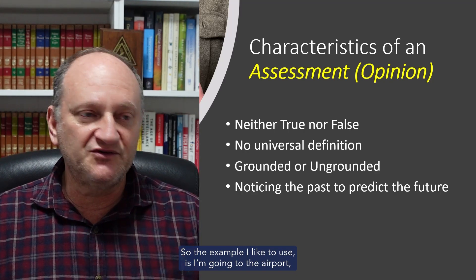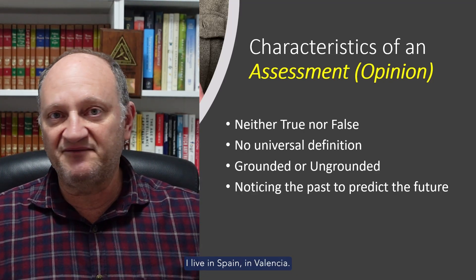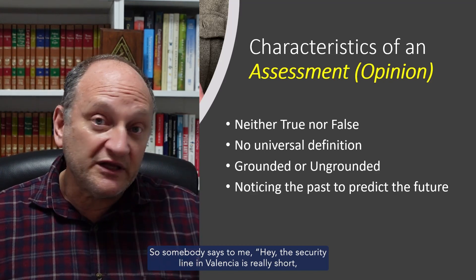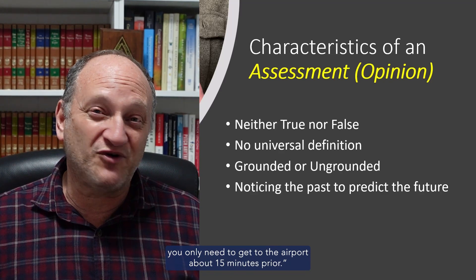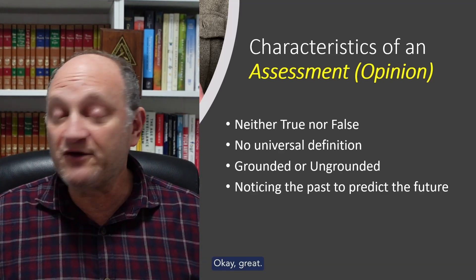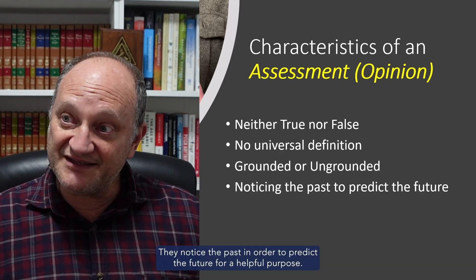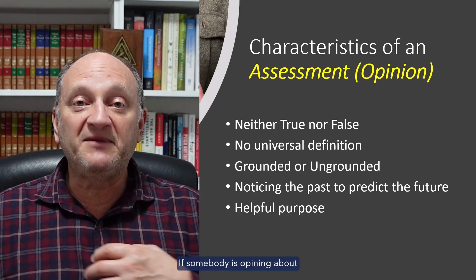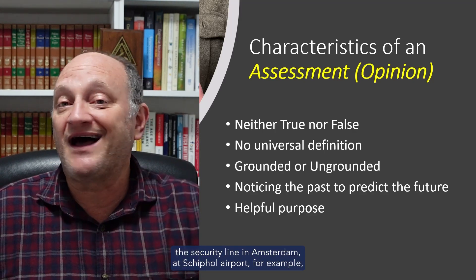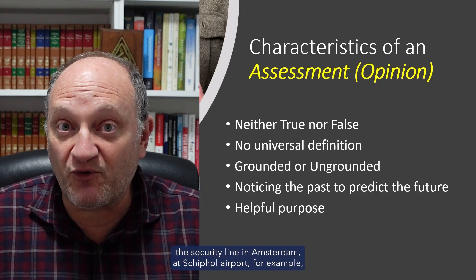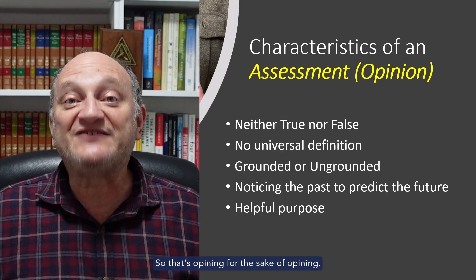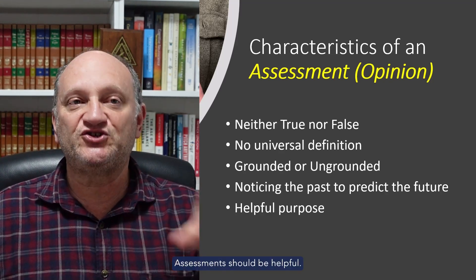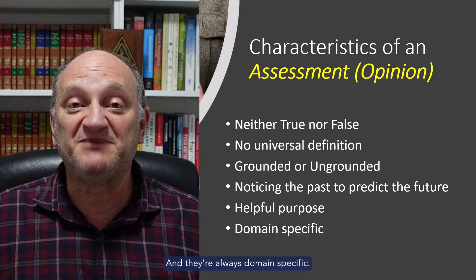The example I like to use: if I'm going to the airport — I live in Spain in Valencia — somebody says to me, 'Hey, the security line in Valencia is really short. You only need to get to the airport about 15 minutes prior.' They notice the past in order to predict the future for a helpful purpose. If somebody's opining about the security line in Amsterdam at Schiphol Airport, for example, that doesn't help me. So that's opining for the sake of opining. Don't do that. Assessments should be helpful, and they're always domain specific.